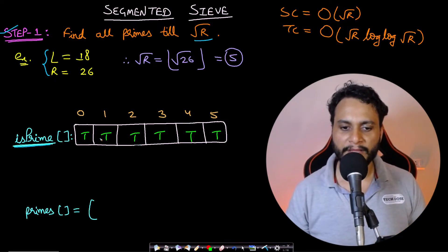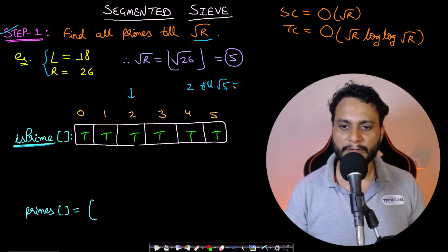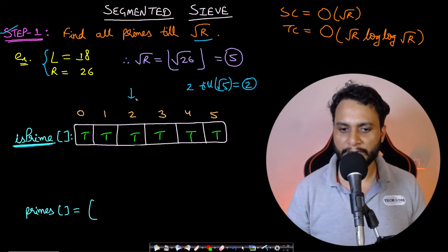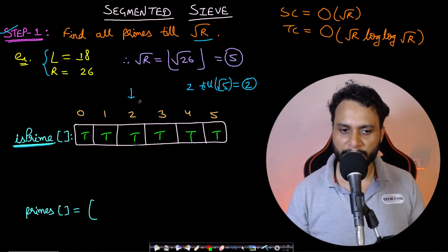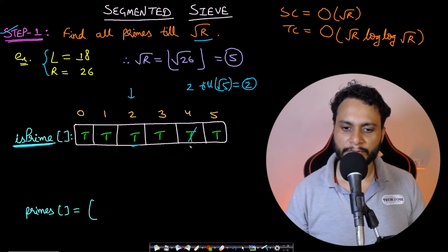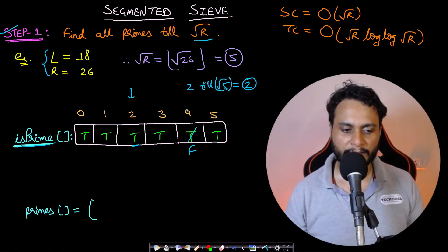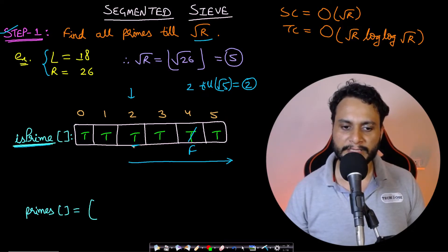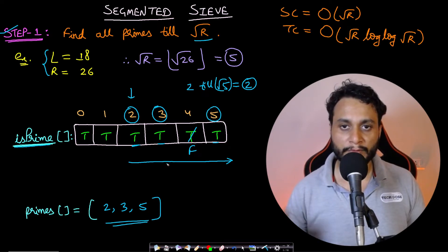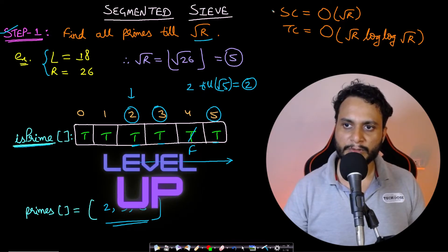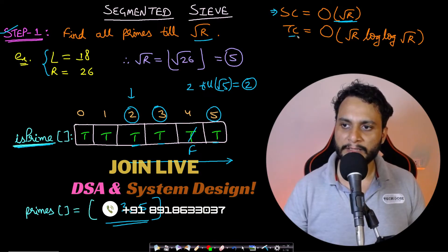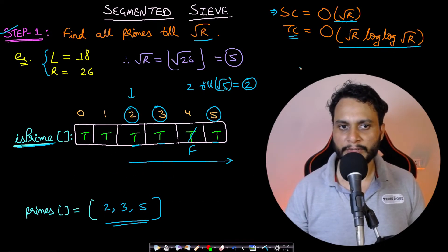We iterate starting from 2 till square root of 5, which is also 2 when taking the floor value. We mark all multiples of 2 as non-prime. We don't iterate for 3 because 3 is greater than square root of 5. We then iterate from 2 till square root of R and save all numbers that are still true into the primes array — giving us primes 2, 3, 5. The space complexity for step one is O(√R) and time complexity is O(√R log log √R).